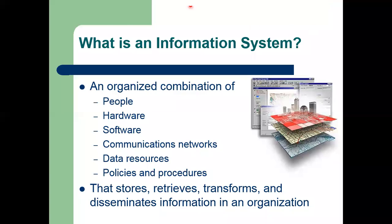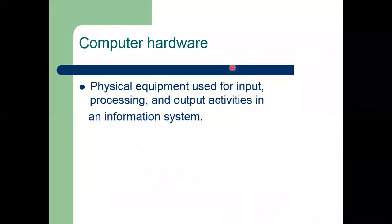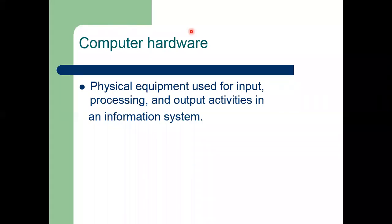In any information system we have different things — people, hardware, and software. Hardware refers to all the tangible, physical equipment we can see: input devices, processing devices, and output devices such as the keyboard, mouse, computer casing, motherboard, memory (primary and secondary like hard drives, RAM, ROM), and output screens like monitors, LEDs, and LCDs. All physical equipment we can touch comes under the umbrella of hardware.